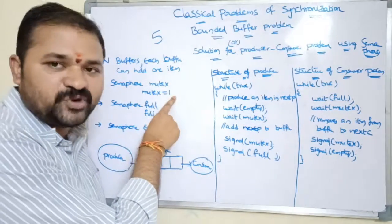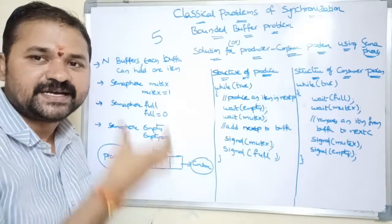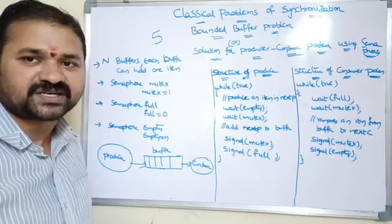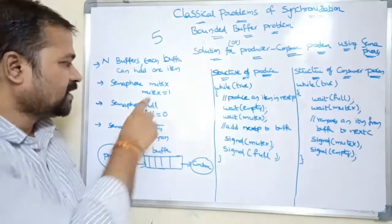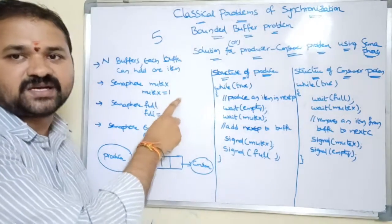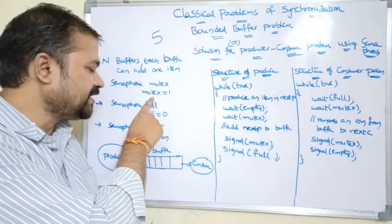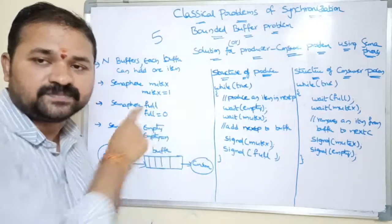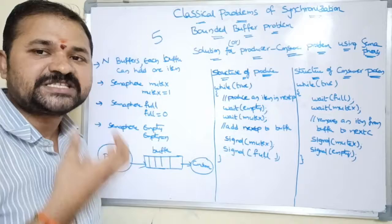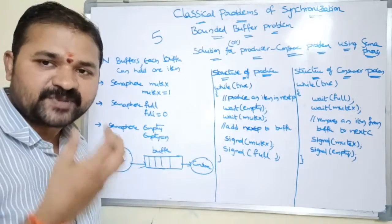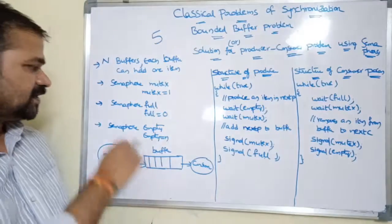The initial value of mutex is 1. If mutex is 1, it specifies that no process is in the critical section, so a process can execute a wait operation and enter the critical section, setting mutex to 0. If mutex is 0, it specifies that a process is already in the critical section.